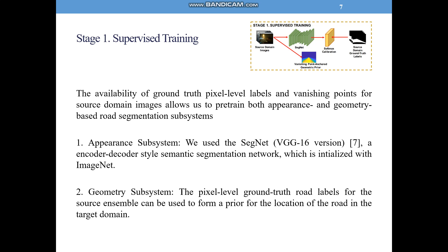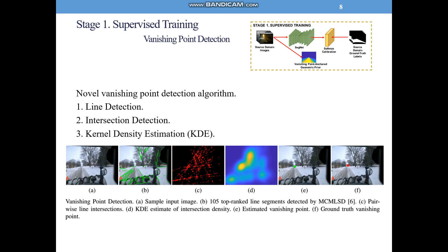In the appearance subsystem, we train the network using ground truth source domain segmentation labels and their corresponding RGB images. In the geometry subsystem, pixel-level ground truth labels and vanishing points from the source are used to form a geometric prior for the location of the road in the target domain. We also propose a novel vanishing point detection algorithm for geometric prior acquisition, which can mitigate the impact of varying camera parameters between the source and target datasets and within the target dataset.